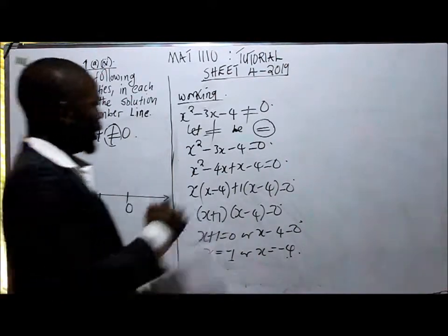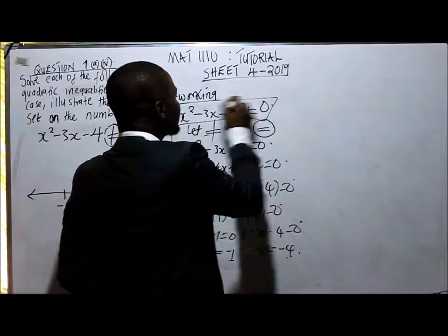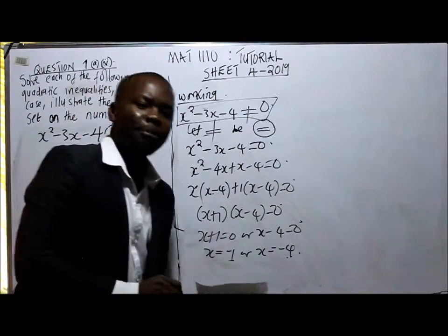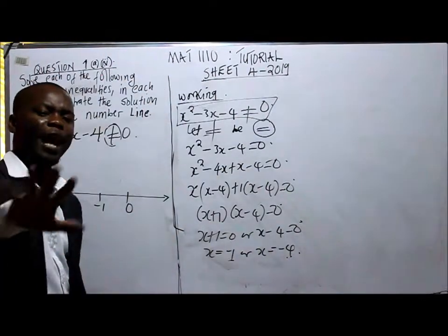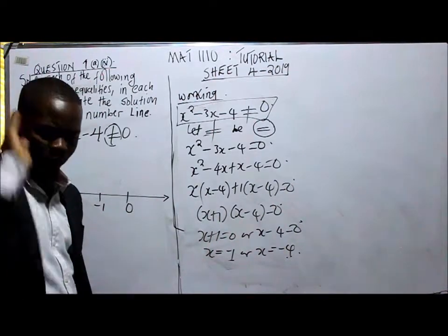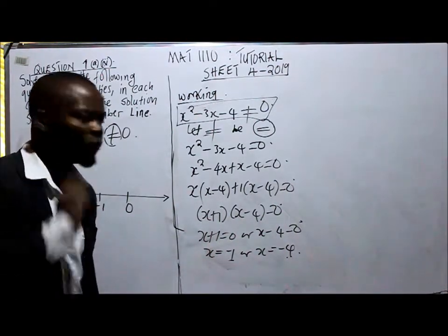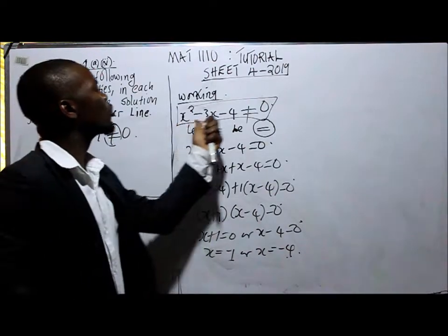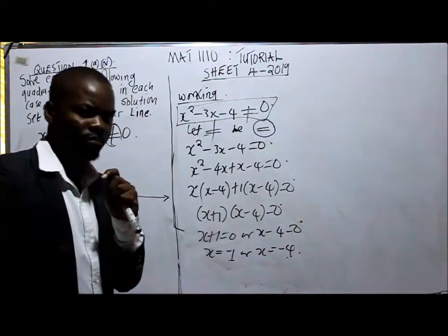This equation is saying, I'm accepting any value of x except the values of x when you're substituting into this equation and giving you 0. Have you gotten me?